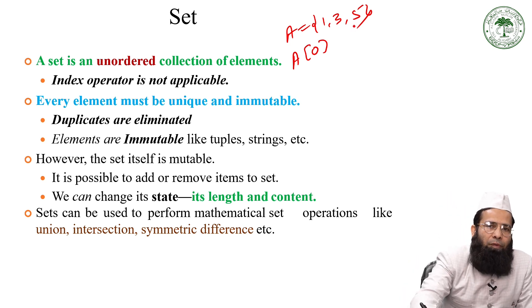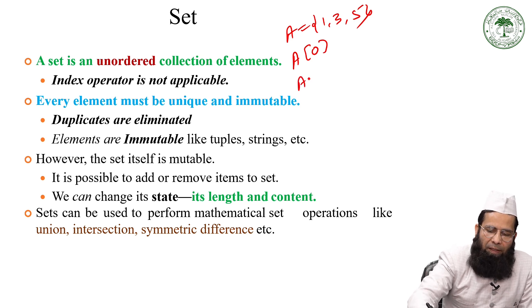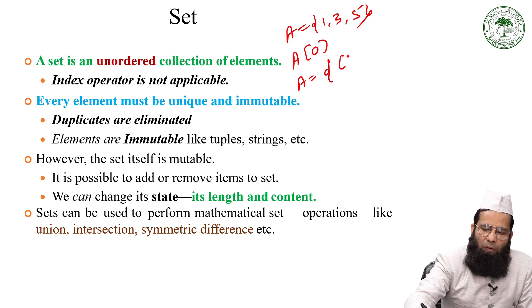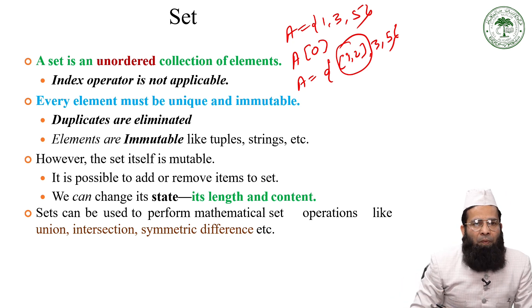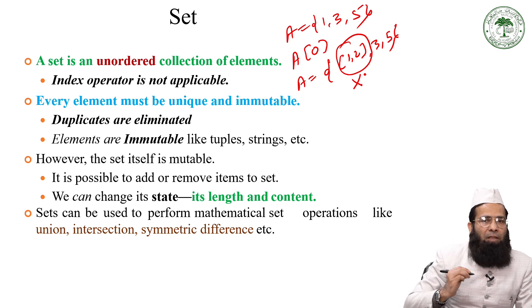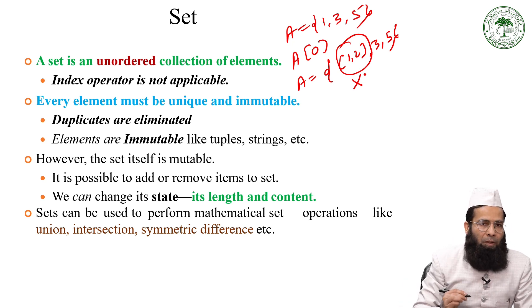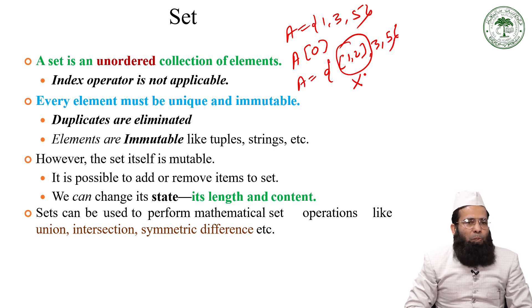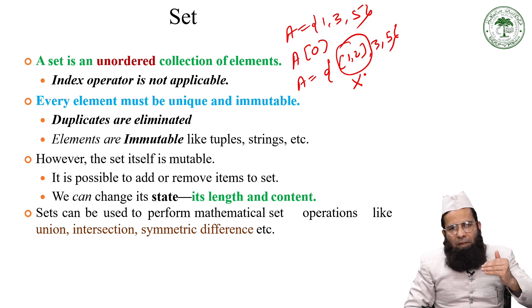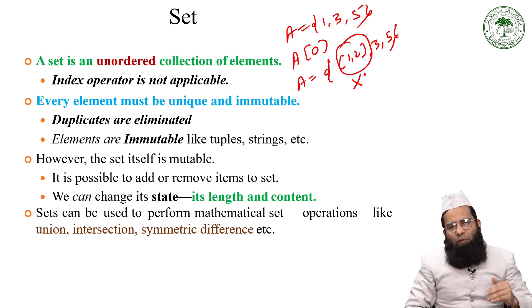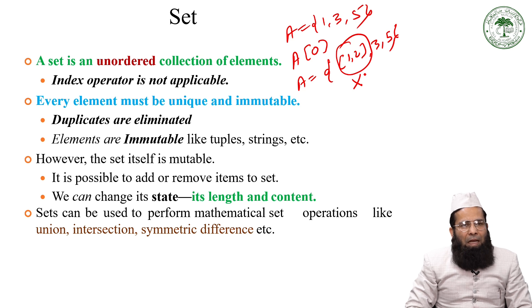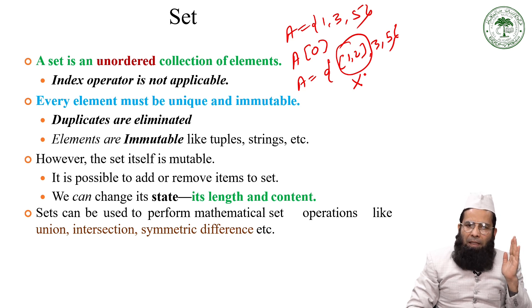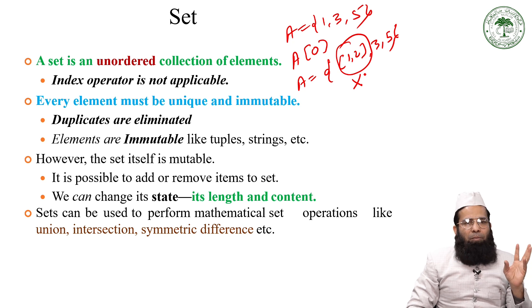A list cannot be part of the elements of a set, because list is a mutable data type, and every element must be immutable. Duplicates are eliminated — if you include duplicate elements, they will be removed internally and you will get only non-repeated elements. Elements must be immutable like tuples and strings. So a set can contain tuples and strings, but it cannot contain lists.